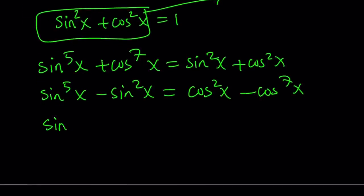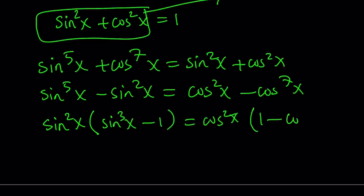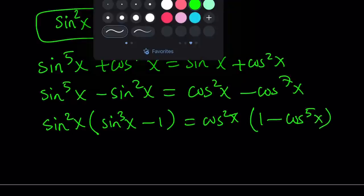Sine squared x, take out sine to the third minus one, take out cosine squared, one minus cosine x to the fifth power. Okay, great. Now how does this help? This is the million-dollar question, right? Okay, so here's how we can use this.